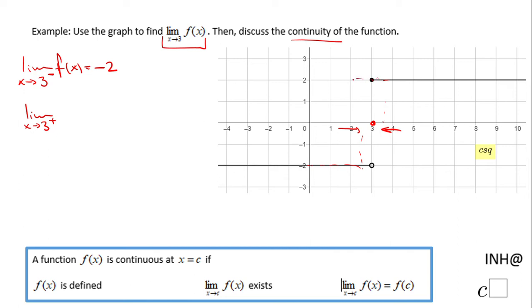Looking at these two limits, because they are different, the limit when x approaches 3 of f(x) does not exist.